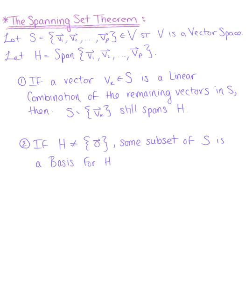We have the first important theorem of our section, the spanning set theorem. Let S be the set of vectors v1 through v_p in some vector space V, and let H be the span of v1 through v_p. The spanning set theorem tells us that if a vector v_k in S is a linear combination of the remaining vectors in S — a redundant vector — then S minus this vector still spans H. The second half tells us that as long as H does not equal the zero vector, some subset of S is a basis for H.